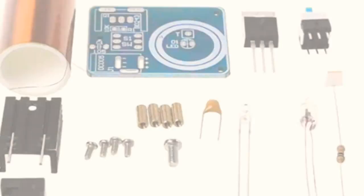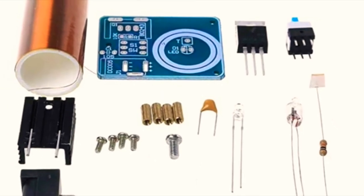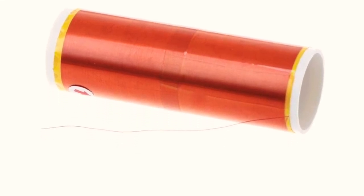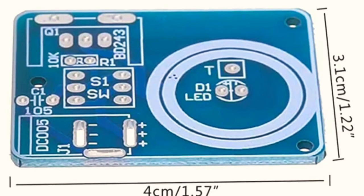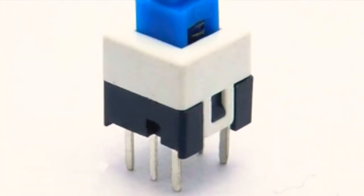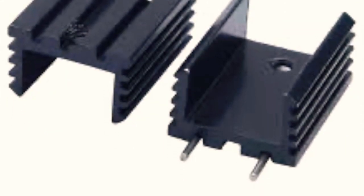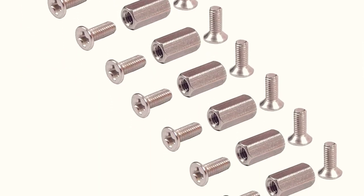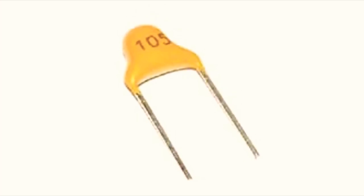On opening the package you will see 12 different components. The first is the coil itself, then the PCB, the transistor, the switch, heatsink for the transistor, some screws and spacers, a one microfarad ceramic capacitor, a blue LED, a neon bulb.